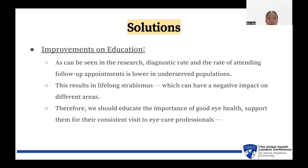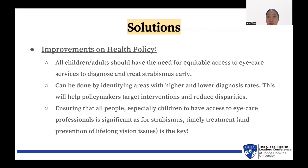Solutions for addressing Strabismus disparities include improving education. Since diagnostic rates and follow-up attendance are lower in underserved populations, resulting in lifelong Strabismus with negative impacts, there is a clear need to educate communities about good eye health. Additionally, improvements in health policy are needed — all children and adults have the right to equitable access to eye care services for early diagnosis and treatment. This can be done by identifying areas with higher and lower diagnosis rates, helping policymakers target interventions and reduce disparities.